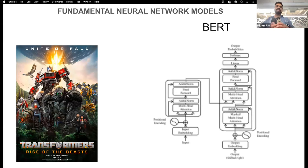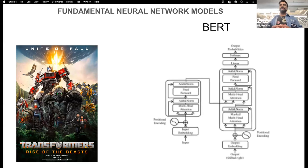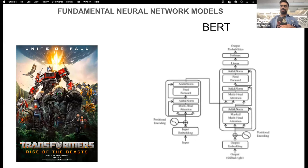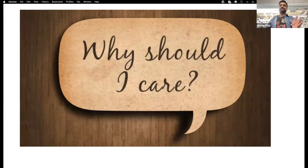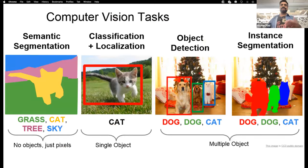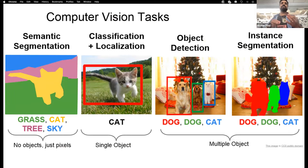All this started about 10 years ago from a fundamental neural network model known as Transformers — nothing to do with the movies. Those transformers were composed of something known as BERT. The reason I'm telling you all this is there are so many amazing tasks people are able to do right now.